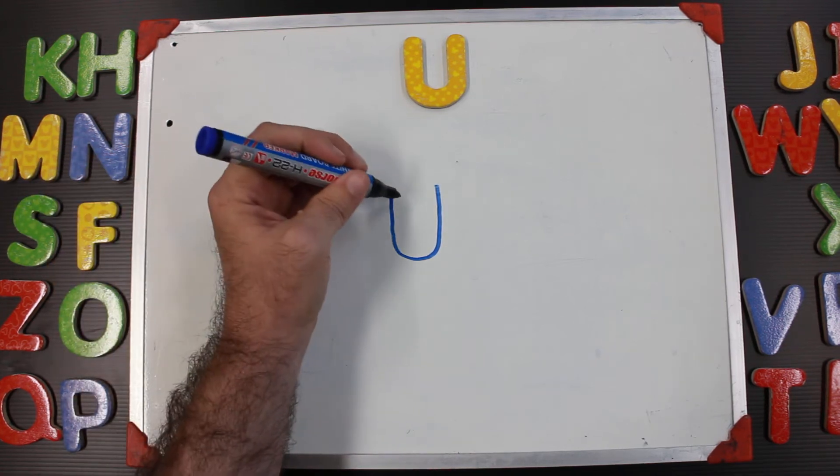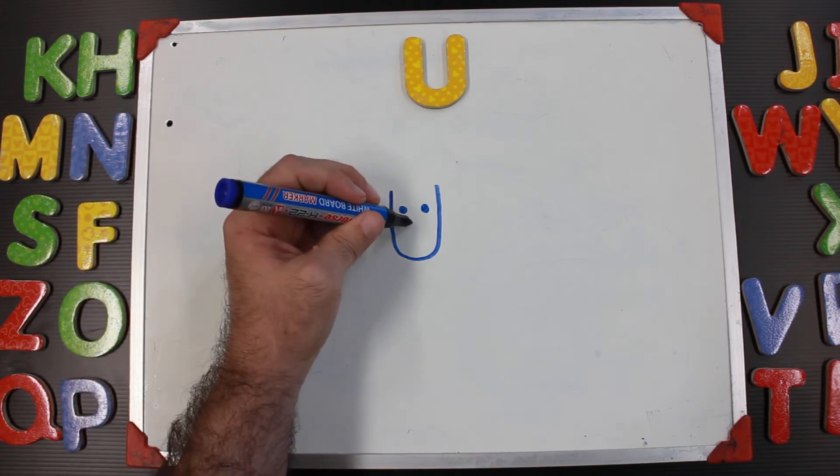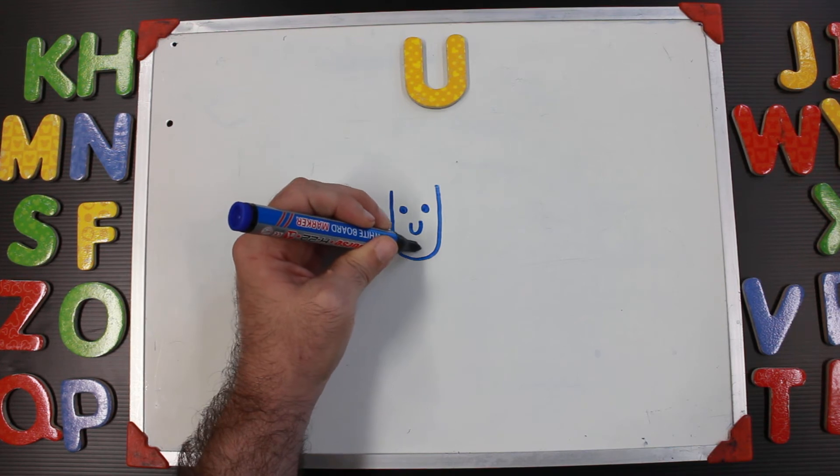For our drawing, what we will do is put two dots in the middle for eyes, make one little U in the middle for a nose, and a wider U for a smile.